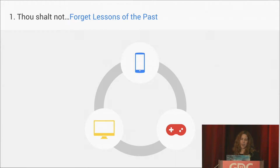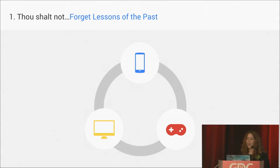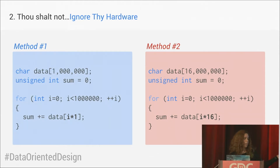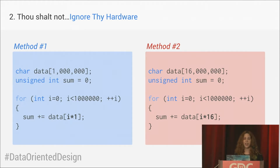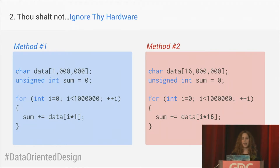Number one: Android mobile in general is pretty much just like PC and console, so many lessons we have learned still apply. Let's take this code, for example. We have two methods — they're pretty much the same. We are iterating an array, but one time we're incrementing by one, and the other time we're incrementing by 16. You'd expect the performance to be exactly the same. So I've put it into a benchmark and the results are quite astonishing.